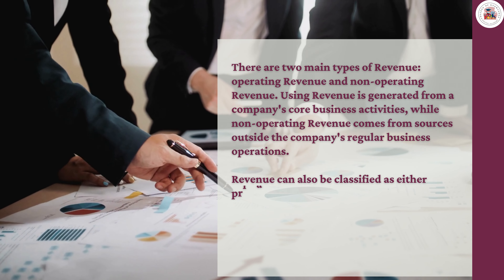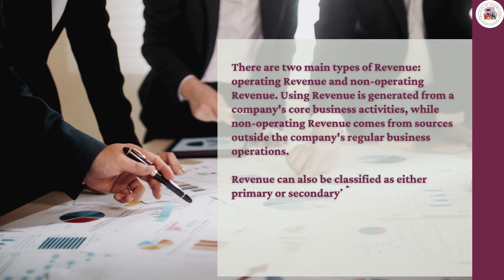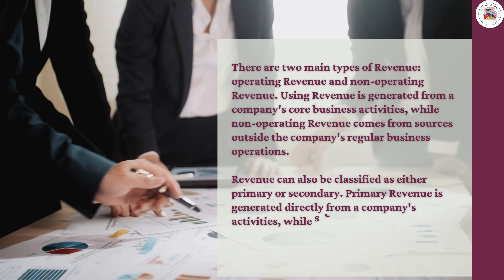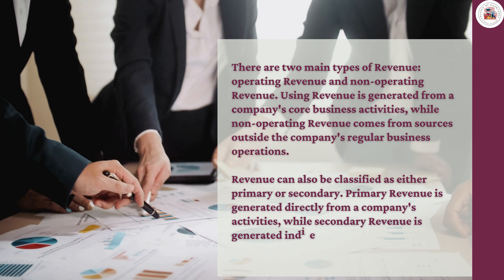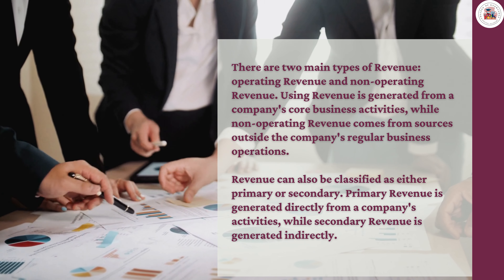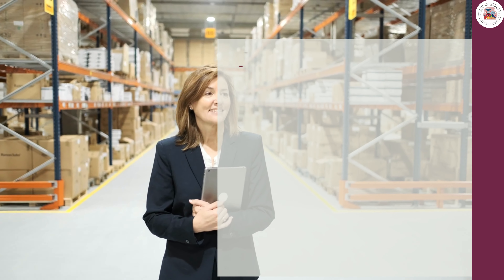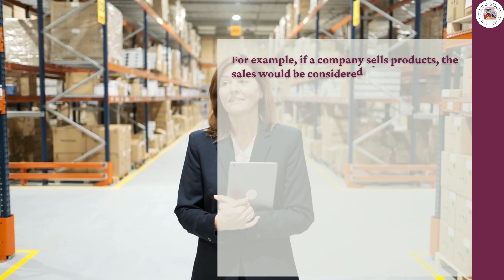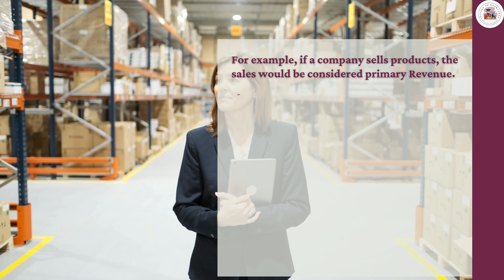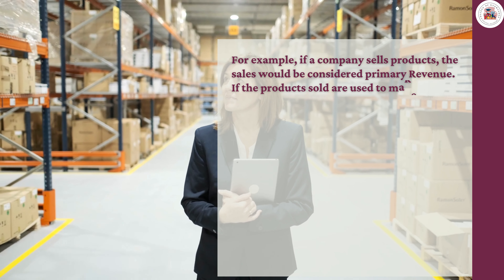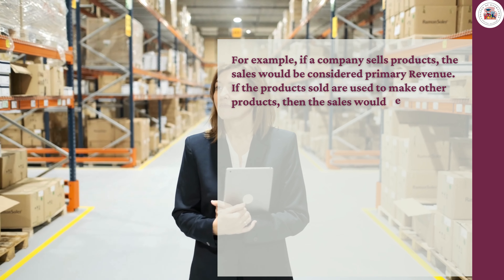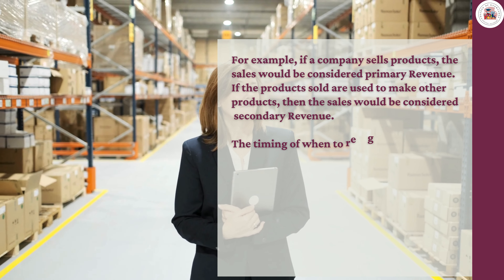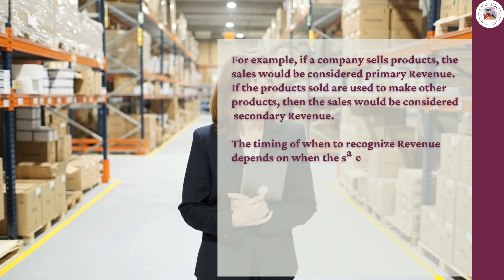Revenue can also be classified as either primary or secondary. Primary revenue is generated directly from a company's activities, while secondary revenue is generated indirectly. For example, if a company sells products, the sales would be considered primary revenue. If the products sold are used to make other products, then the sales would be considered secondary revenue.